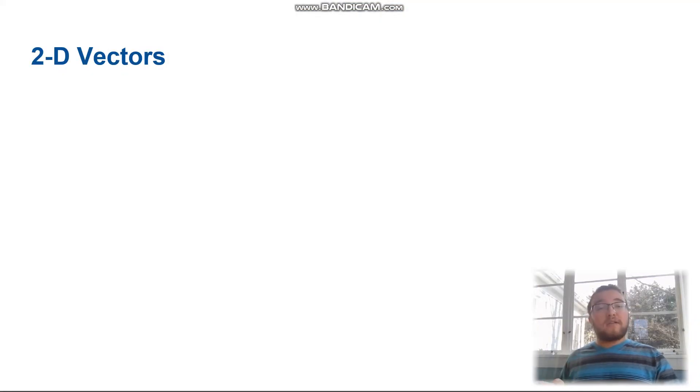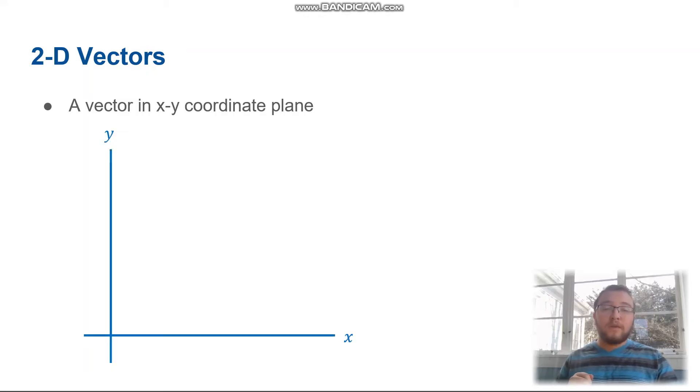If there are 1D vectors, there are also 2D vectors. These are vectors that are in an x-y coordinate plane, like this one. Now, here's a vector A. It's not purely along the x direction. It's not purely along the y direction. It is a mix of the two of them. One more important thing that we use to describe this vector is its angle. So we have this angle here called theta.